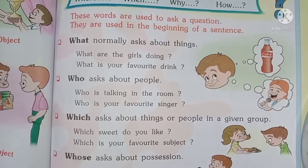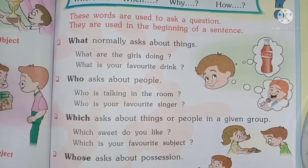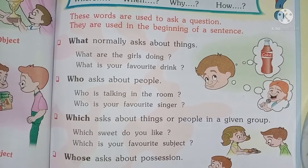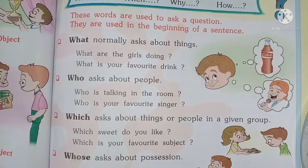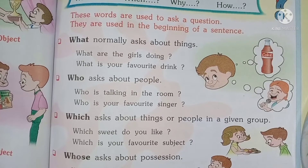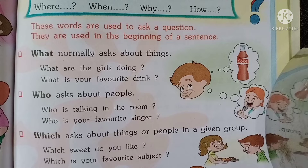The first word is 'what' (W-H-A-T). We normally use 'what' to ask about things. For example: what are you doing? What is your favorite book? What is your favorite drink? What is your favorite food? What is your name? What do you like to play? This type of question we normally ask about things, using 'what'.